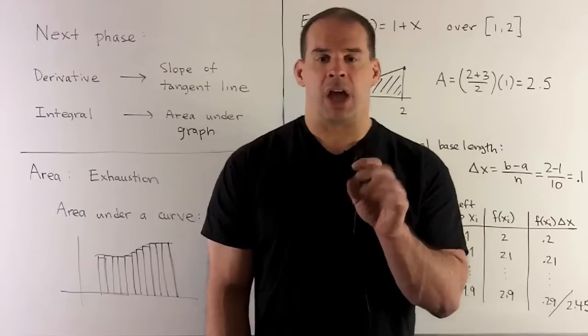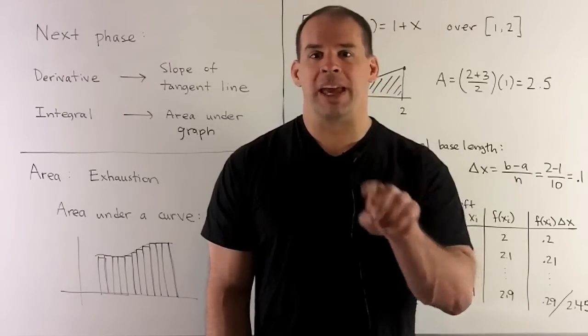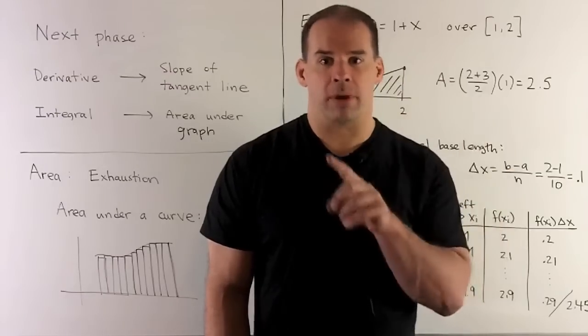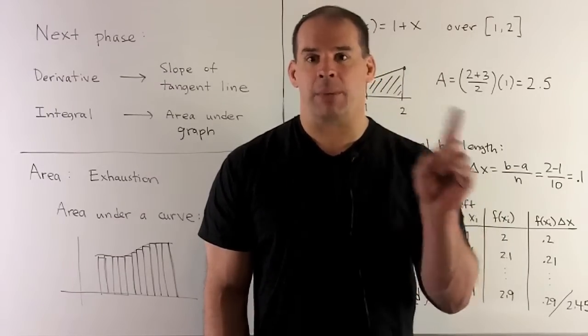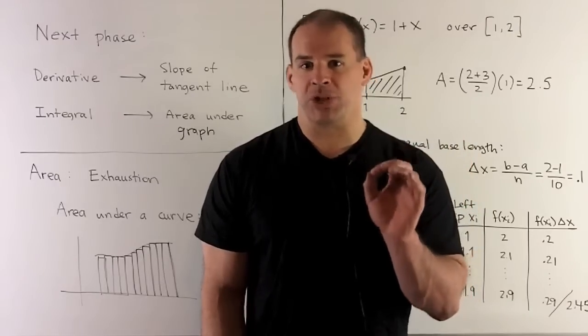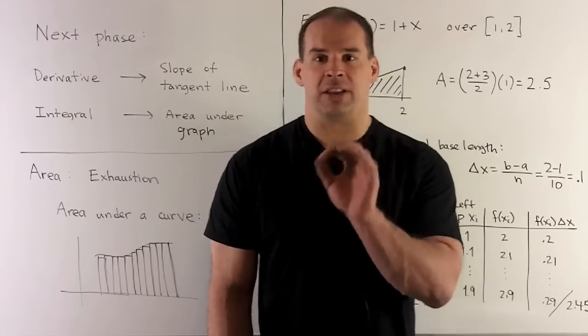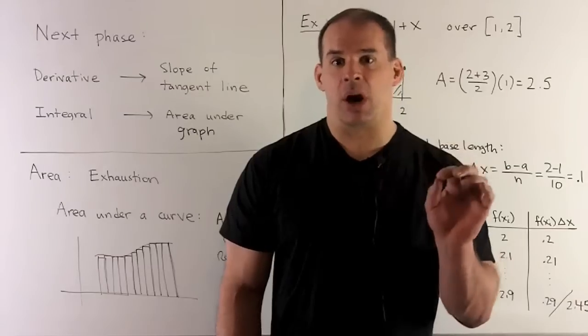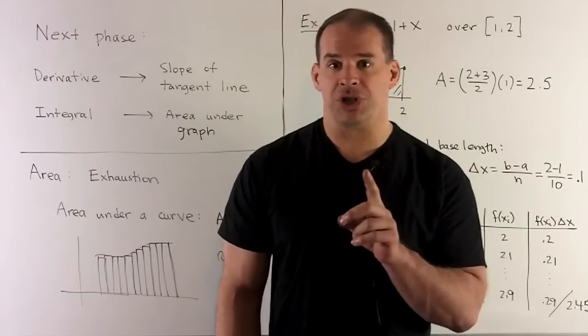So the idea is, as you let the simple regions get smaller and smaller, you could fill the complicated region up with more and more of them. We take the area of those simple regions and add them up. That's going to give you an approximation. Then, as you take the limit as the size goes to zero, if that limit exists, you can call that the area of your complicated region.